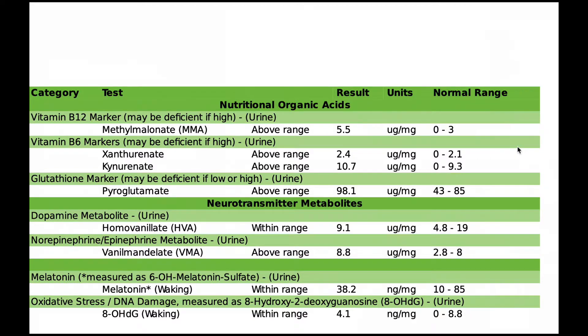The organic acid markers: we check for B12 — methylmalonic acid is a more sensitive marker than B12 in a blood test. Sometimes you can have good levels of B12 in the blood but still be low at a cellular level. Xanthurenate and kynurenate are neuroinflammation markers that are B6 dependent. When they're elevated, that often means there's a B6 deficiency, but it can also be associated with anxiety, low progesterone — which is B6 dependent — and low melatonin. Understanding this can help to explain why you may be experiencing the symptoms that you are experiencing.